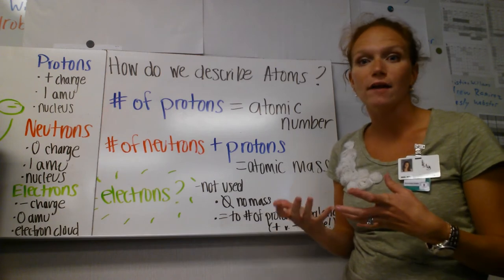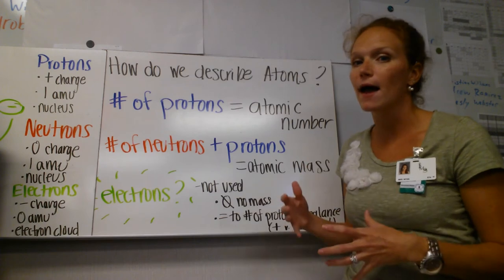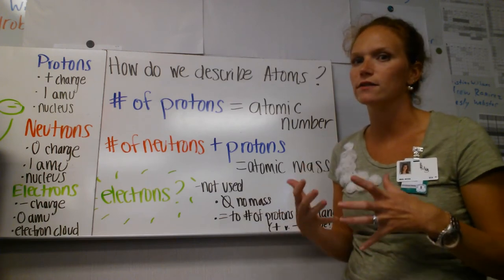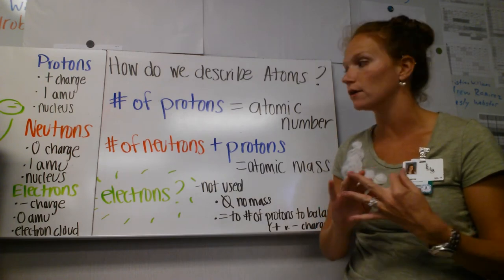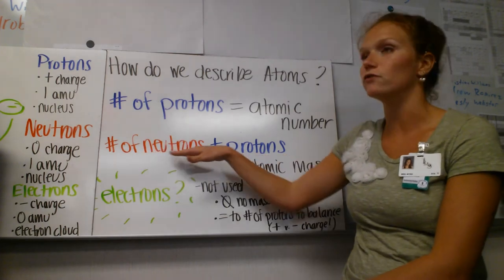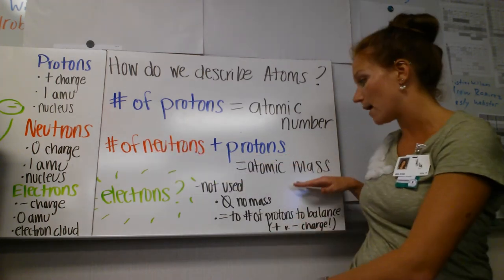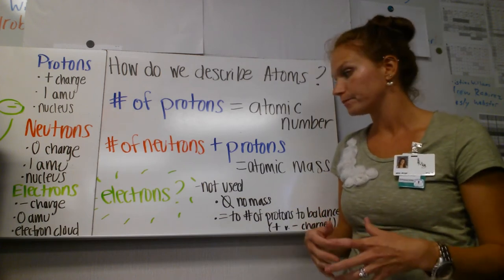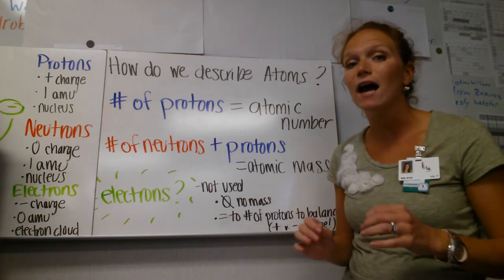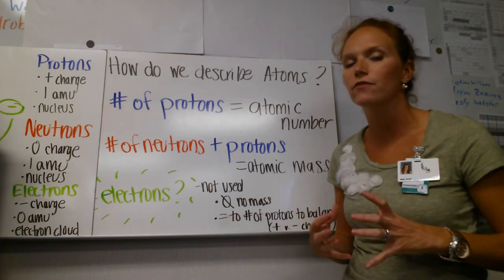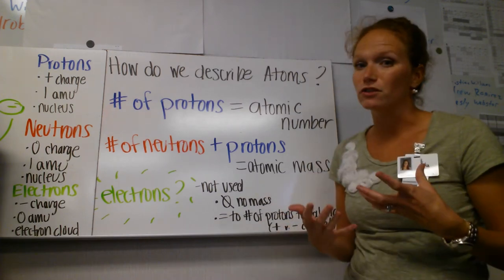Another way we describe the atom is by the atomic mass. Atomic mass is measured in atomic mass units — those AMUs. Remember: the proton has one, the neutron has one, and the electron has zero. So the atomic mass is the number of neutrons plus the number of protons. Electrons are not included because they're so small and they're out in the electron cloud — we don't really use them to describe the atom.